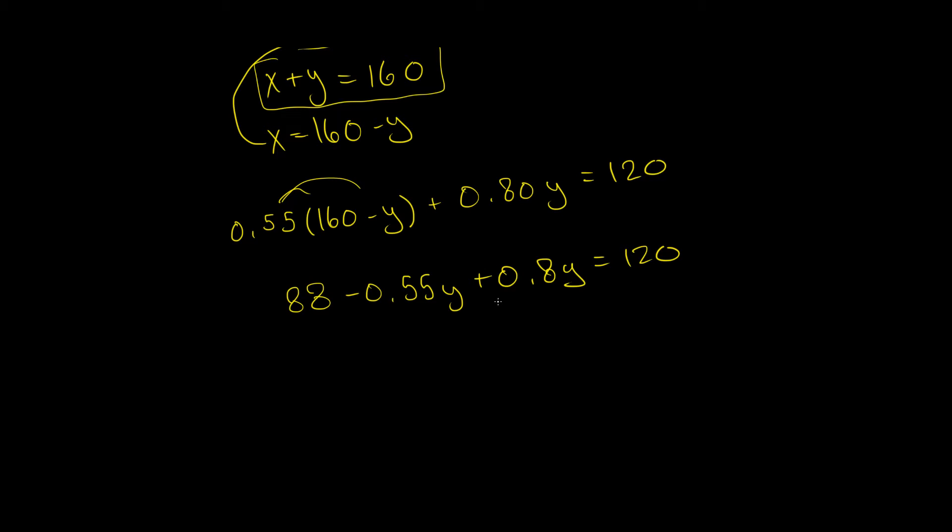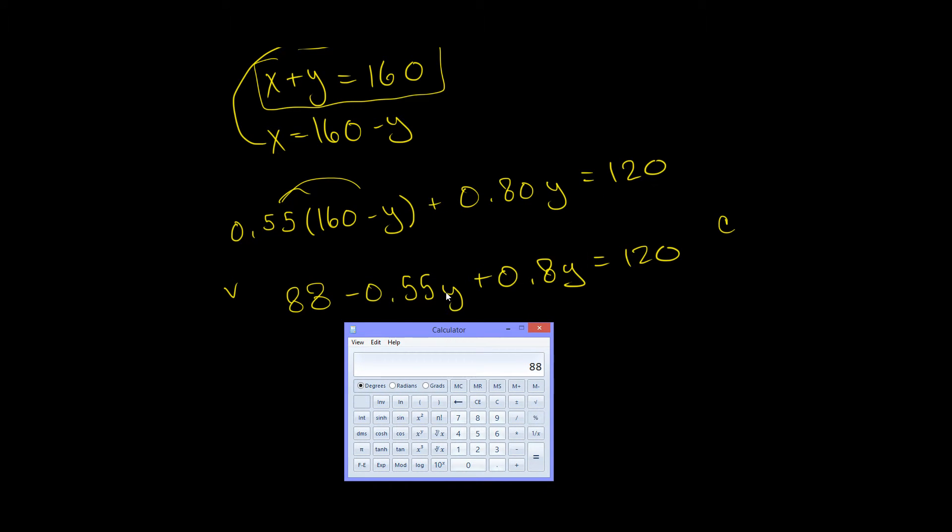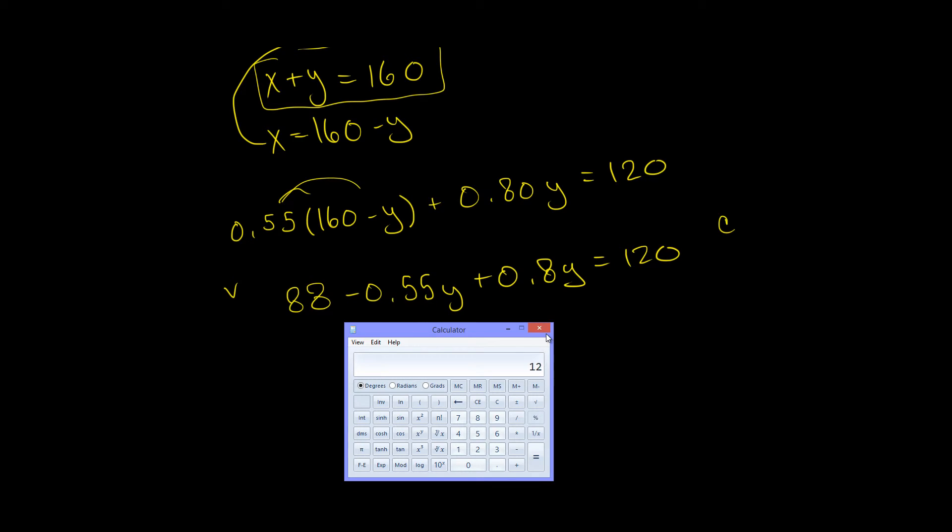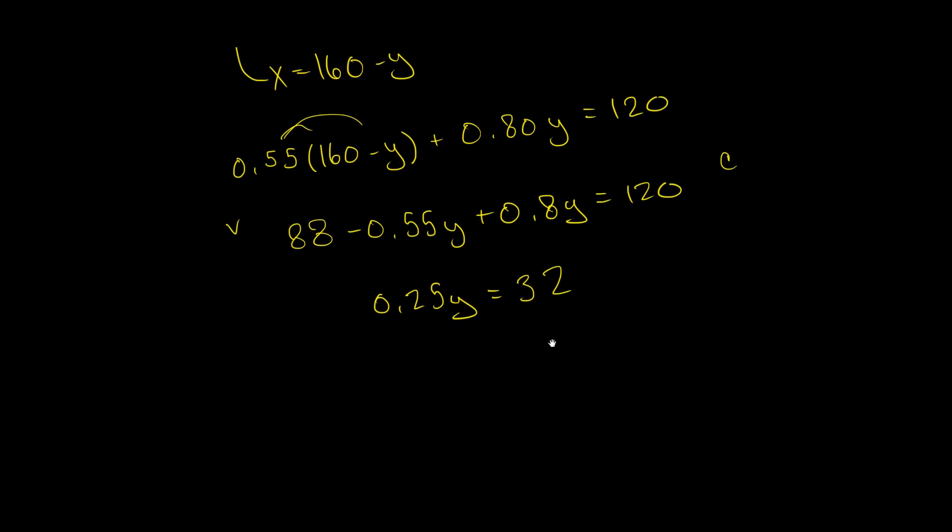And now I'm just going to solve this by bringing all the variables to one side and all the constants to the other side. I'm going to have my variables on the left and my constants on the right. So 0.8 minus 0.55 gives us 0.25. 0.25Y equals, and I'm going to have 120 minus 88 on the other side, which gives me 32.